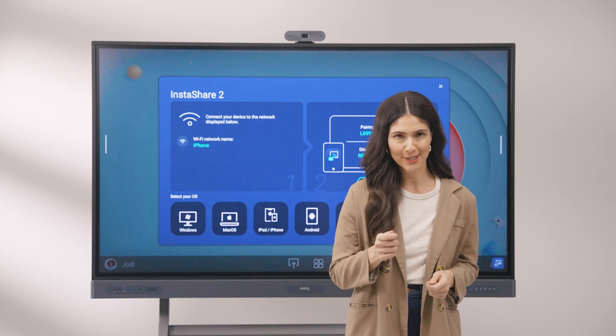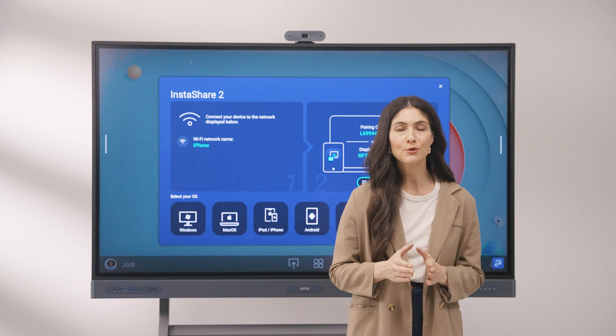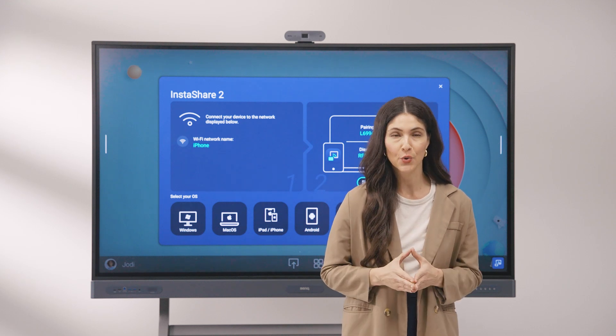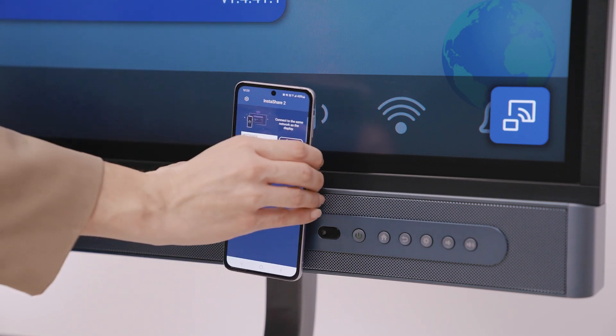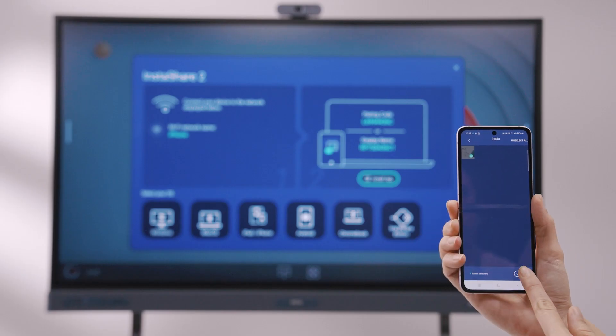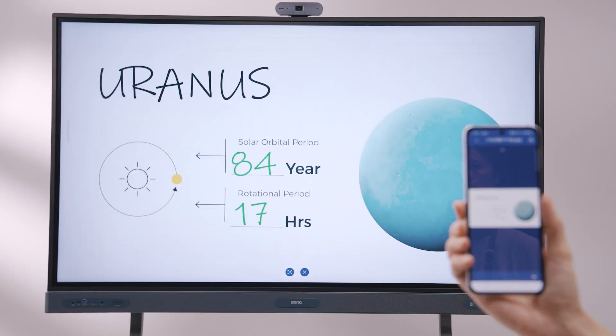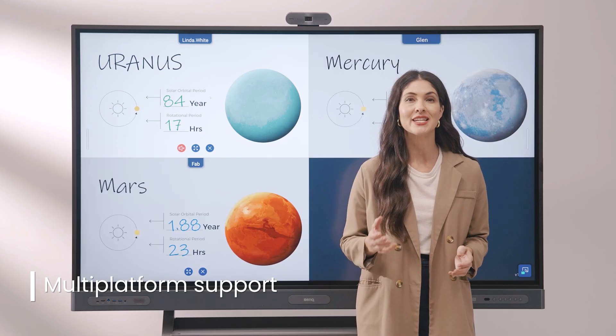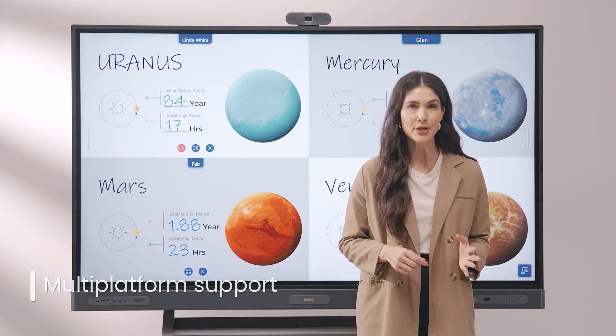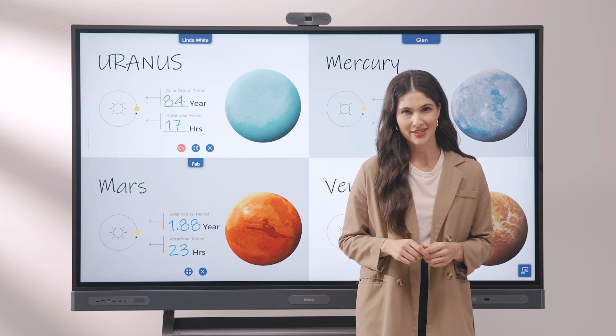There's another great way to get students involved. You can use the board's InstaShare 2 wireless screen sharing software. Share content instantly from your phone with just a tap. Students can wirelessly share up to nine devices, including laptops, smartphones, tablets, and Chromebooks.